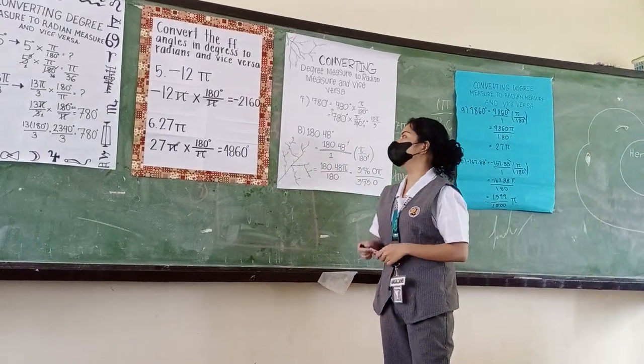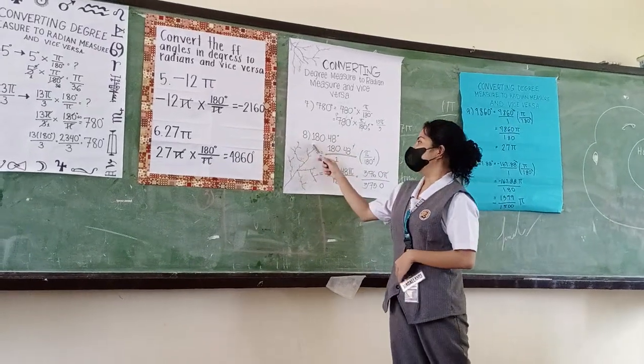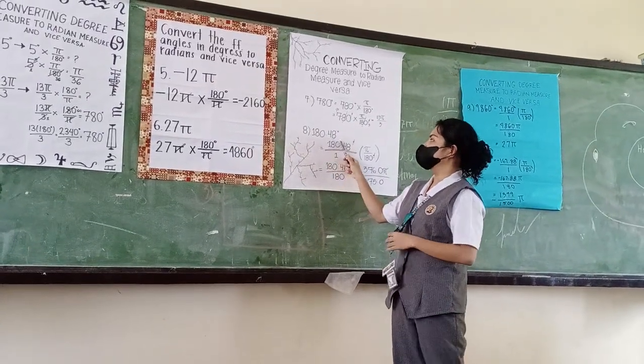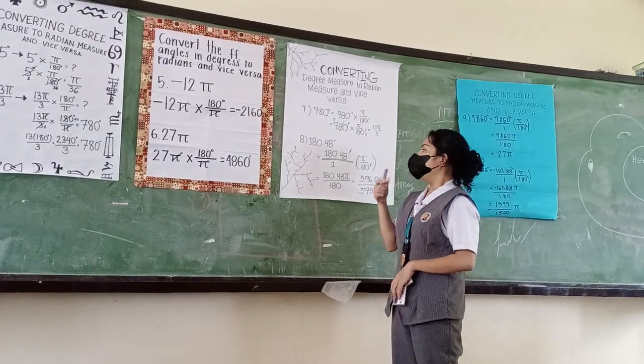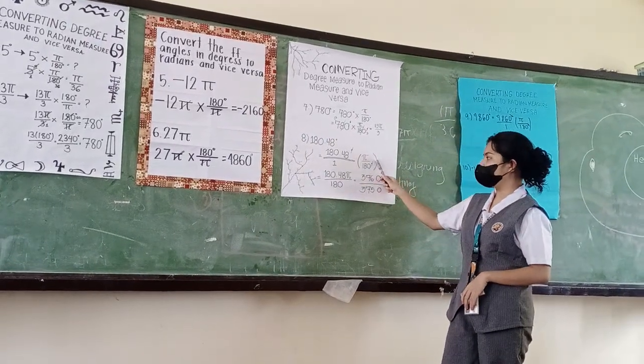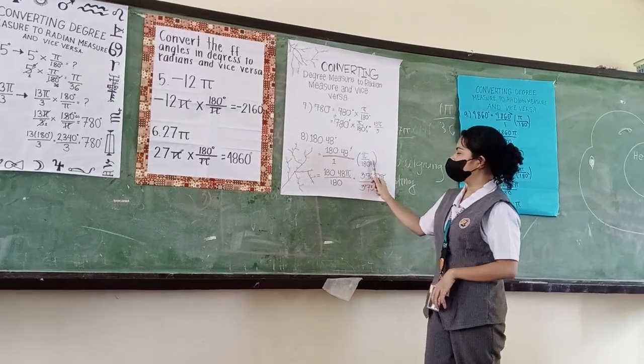Let's look at number 8. We have 180.48 degrees equal to 180.48 over 1 times π over 180 degrees.